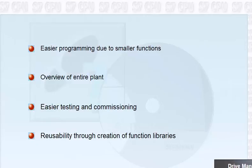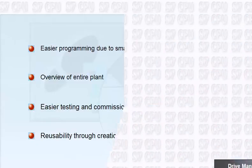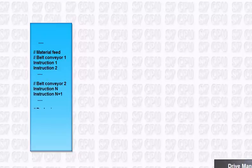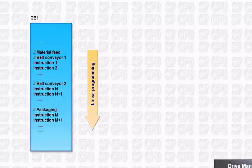Let us take a closer look at an example taken from a possible realization of this plant structure. In principle, an entire program can be instruction by instruction contained in one single block, for example the organization block OB1. This is referred to as a linear program.